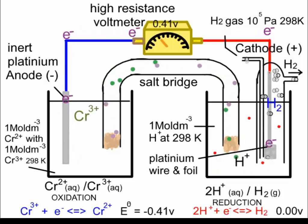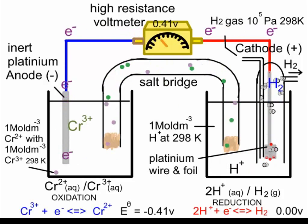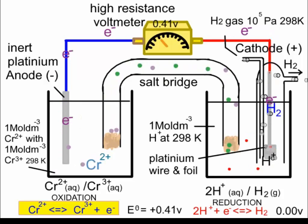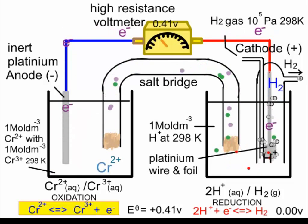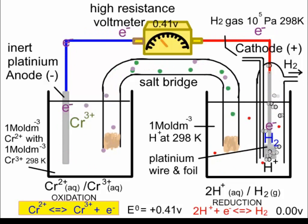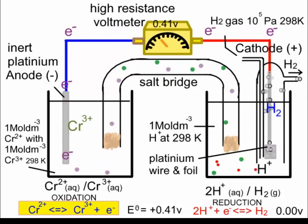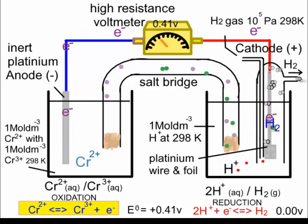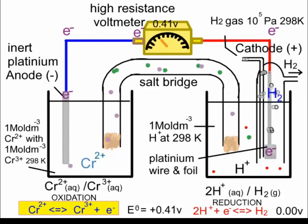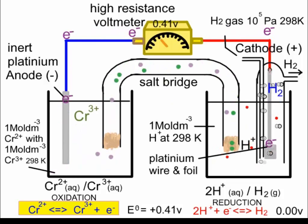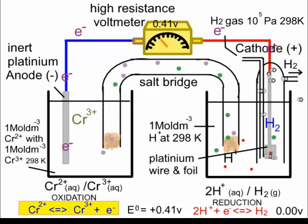Looking at the equation in blue at the bottom left, I reverse it to show it as an oxidation instead, and I change the sign of the E-theta value from minus to plus 0.41 volts. The standard hydrogen half cell has the larger reduction potential at 0.00 volts. Reduction potentials are exactly that — the potential to undergo reduction. The larger the value, the more likely it is to undergo reduction when coupled with another half cell.